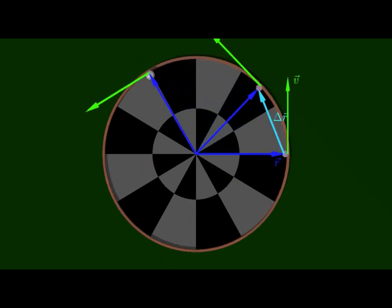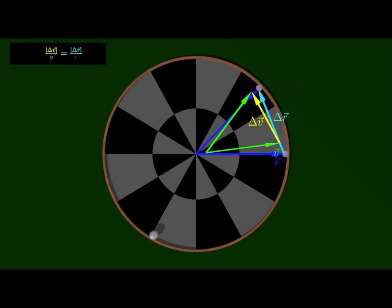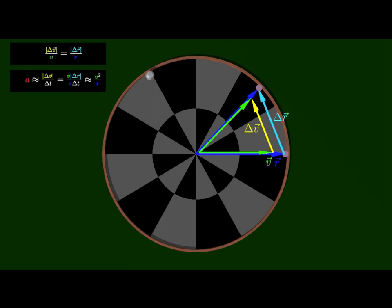The magnitude of the acceleration can be determined by noting that over short time interval, the change in the position vector and the change in the velocity vector form similar isosceles triangles. This information then leads to a simple expression for the instantaneous acceleration and the limit as the length of the time interval goes to zero.